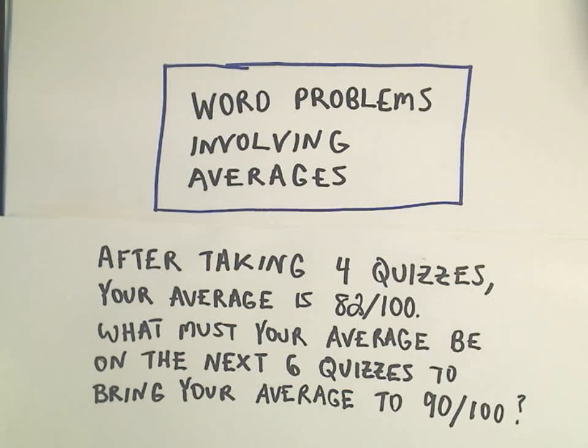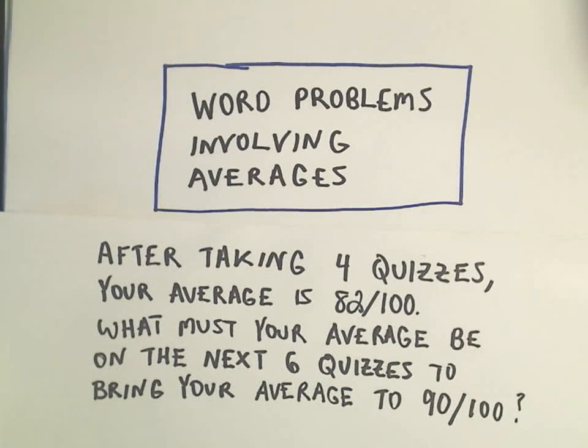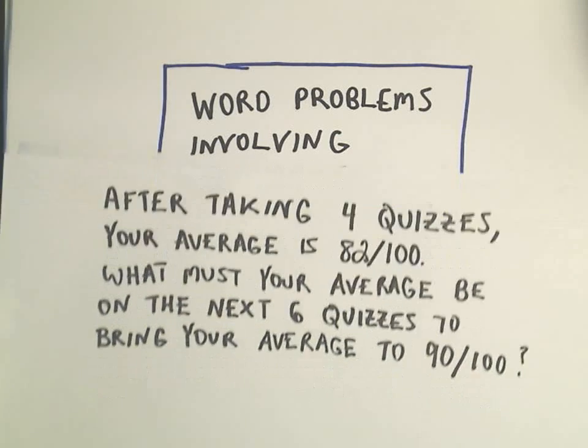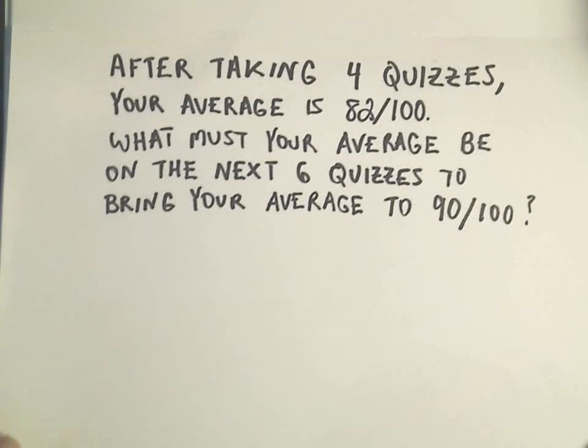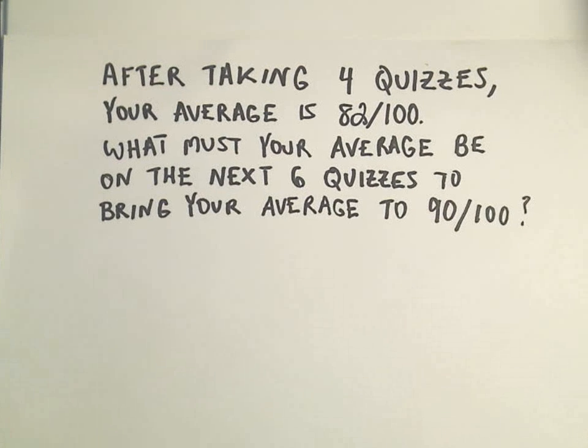All right. In this video, I want to do an example of a word problem involving averages and maybe a situation that you have found yourself in. So suppose you've taken four quizzes in your class and your quiz average so far is 82 out of 100, or 82 percent. And maybe you're trying to bring your percentage, your quiz average up to 90 percent.